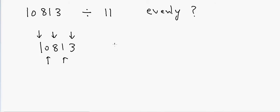So 1 plus 8 plus 3 is equal to 12, and 0 plus 1 is equal to 1. If I subtract them both, then I'll get 11, and 11 is divisible by 11, so this number should be evenly divided by 11.